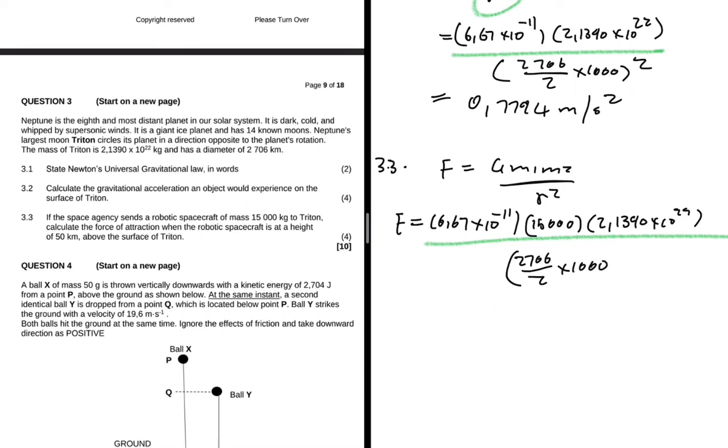But the robotic spacecraft is said to be at a height of 50 kilometers above the surface of Triton. So here we're going to have plus 50 kilometers, and then we also multiply this by 1000 and we square everything. Let me just put that in my calculator real quick. So I'm getting a force of 10,842.08 Newtons.